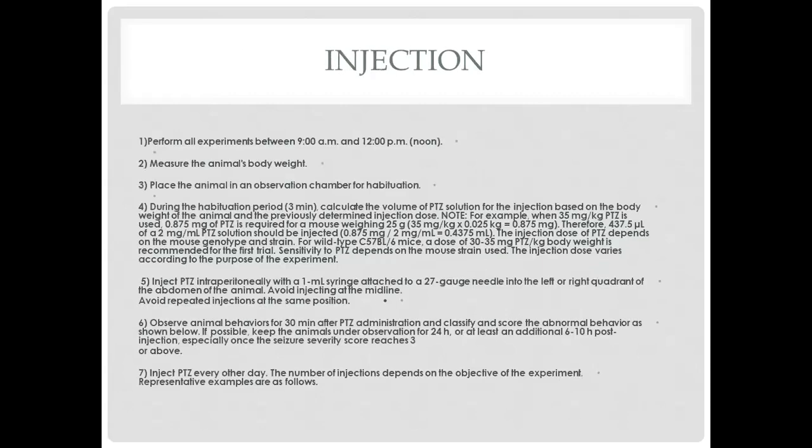Now, the injection of PTZ. We have a total of 7 steps. Step 1: perform all experiments between 9 am to 12 pm noon. Step 2: measure the animal's body weight. Step 3: place the animal in an observation chamber for habituation. Step 4: during the habituation period of 3 minutes, calculate the volume of PTZ solution for injection based on the body weight of the animal and the previously determined injection dose.